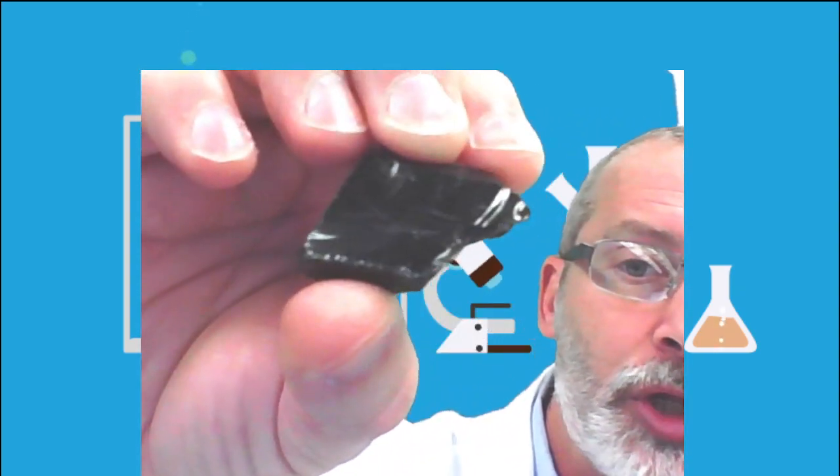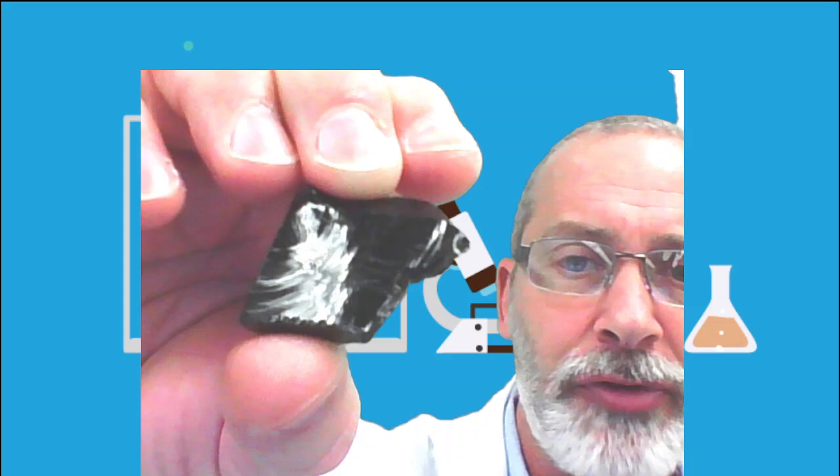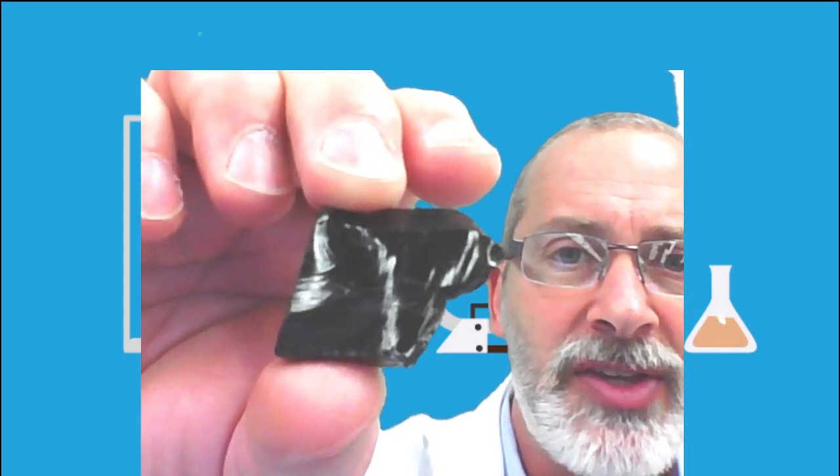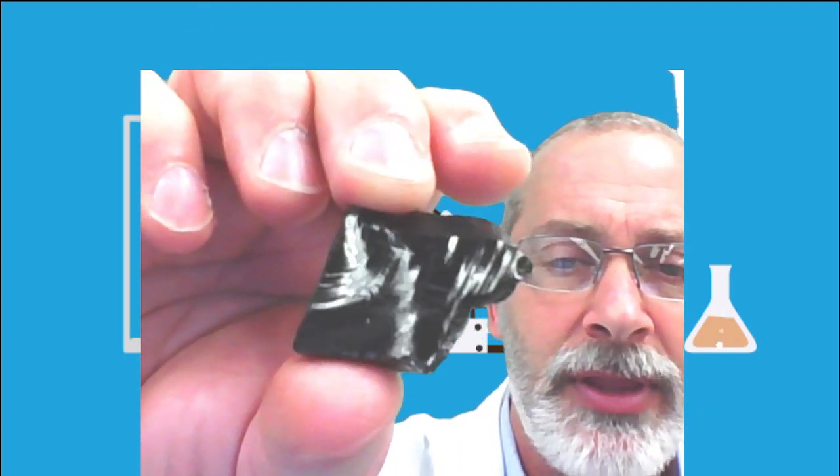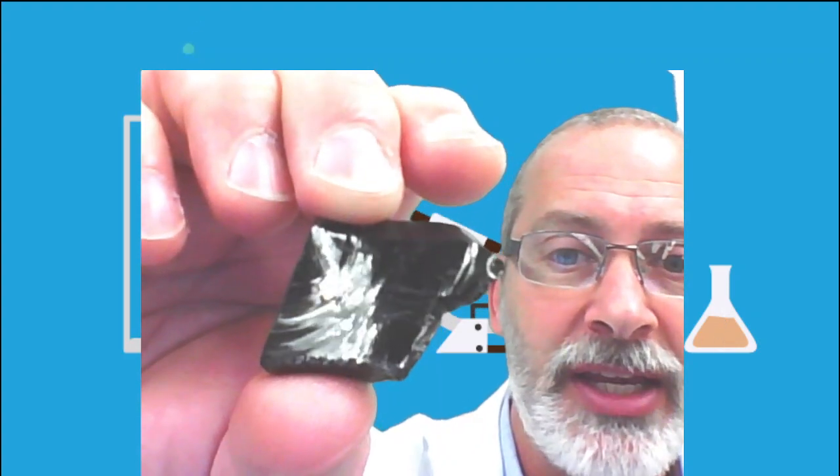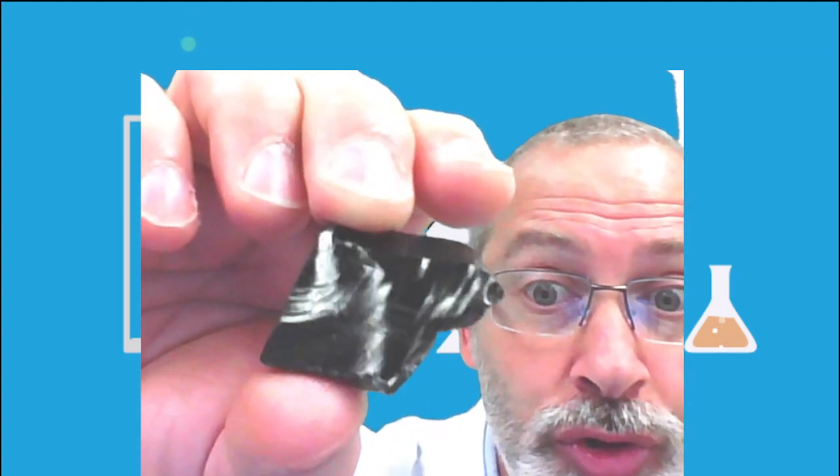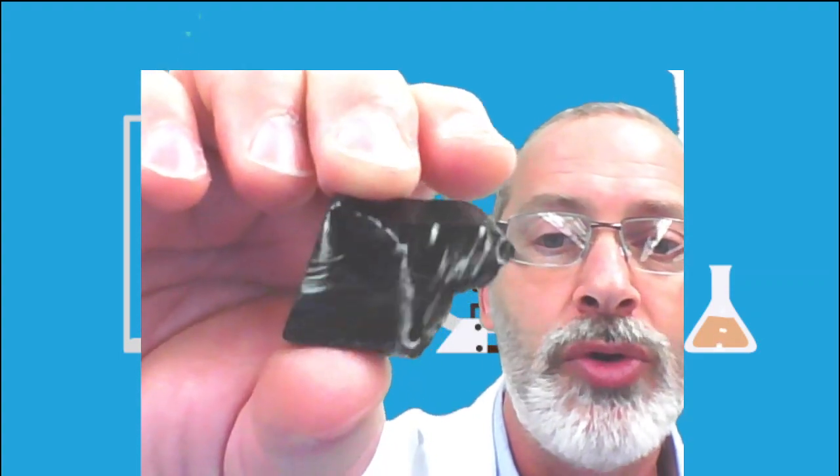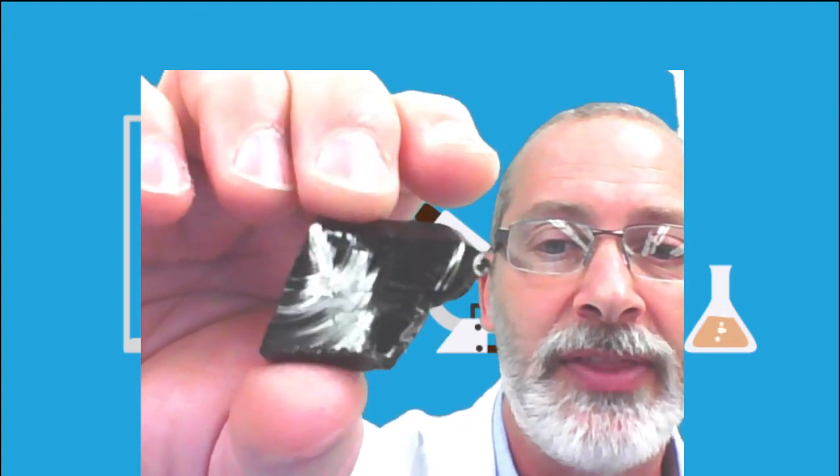I'm going to begin with the igneous rocks. This is igneous rock number one. I'll give you a close-up view. You can feel free to pause if you want to, but think about the various characteristics and properties that we've gone over this week. What type of igneous rock do you think it is? I'll give you some hints, intrusive or extrusive. That may help you narrow down your focus in identifying this particular igneous rock number one.